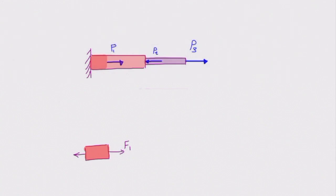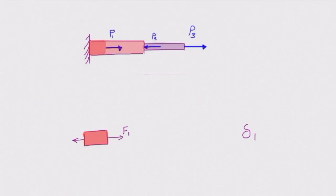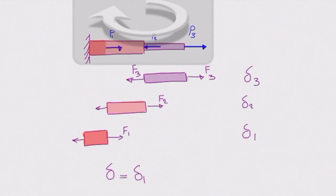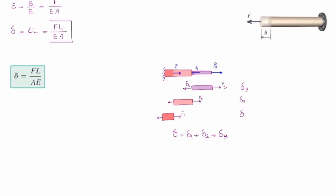Consider element number one — we can determine the change in length, either shortening or elongation, and call that delta one. Similarly, we determine the deformation in the second part, delta two, and in the third element, delta three. The total deformation in the system is delta one plus delta two plus delta three. This is the deformation in a system of axially loaded elements connected together.